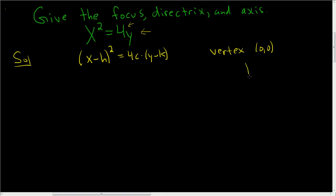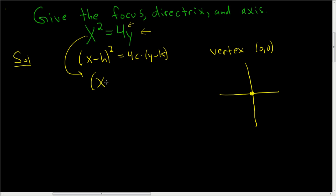I'd like to draw a picture, so let's draw a little picture here. Here's the vertex. Now, how do you find c? Well, if you write this one down like this, let's make it match.